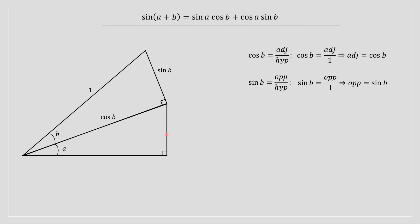Now we proceed to the bottom triangle. We apply sin of A — considering angle A, we're trying to solve for a specific side using SOHCAHTOA: opposite over hypotenuse. Notice that the hypotenuse of triangle A is cos B. So replacing that in, sin A times cos B gives us the opposite side. We replace that into our diagram.